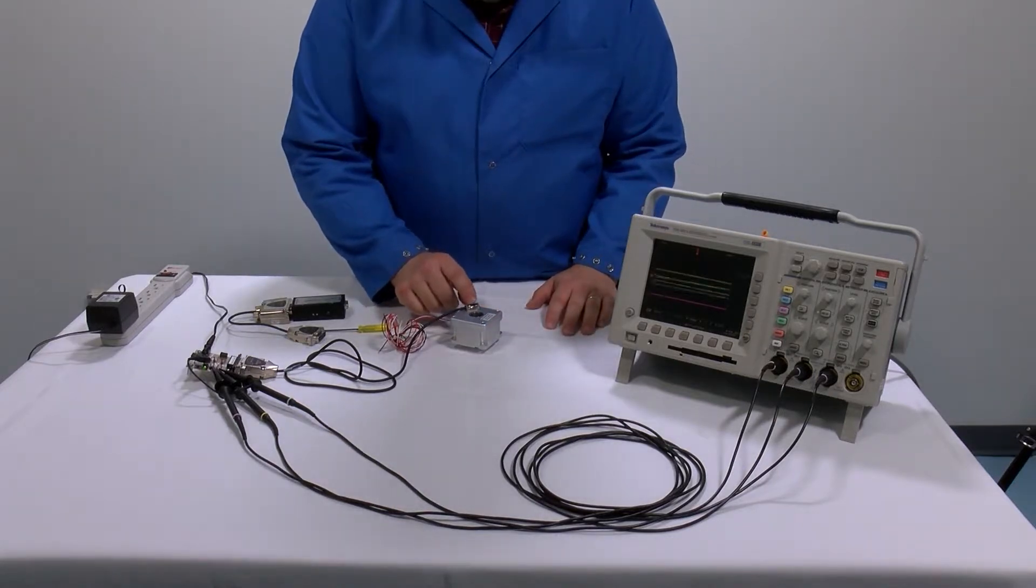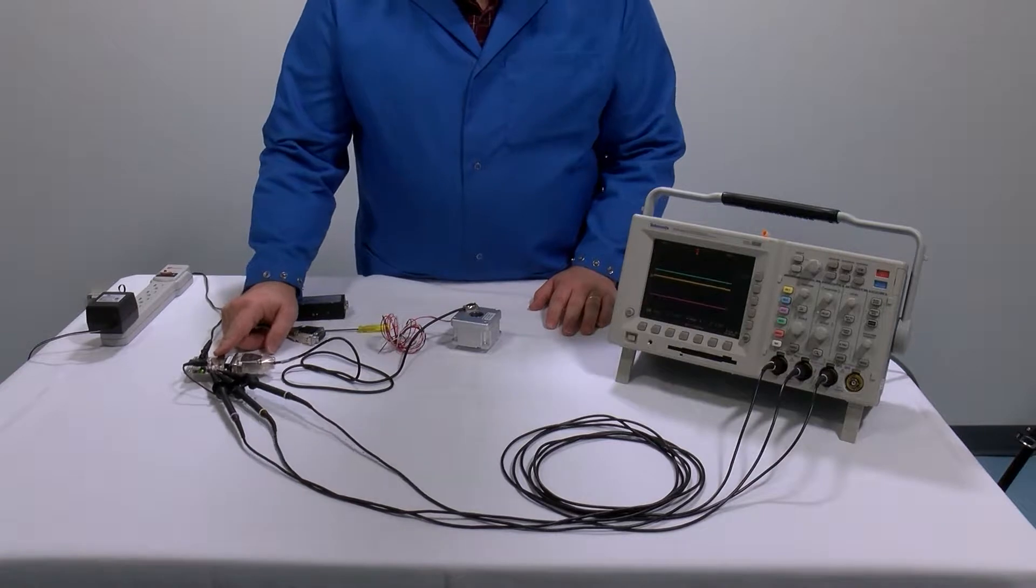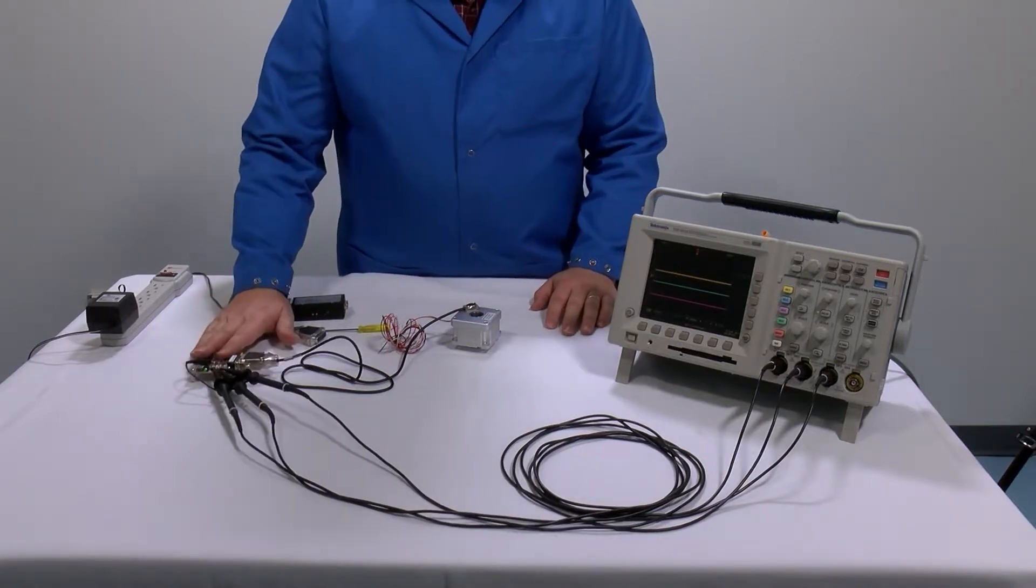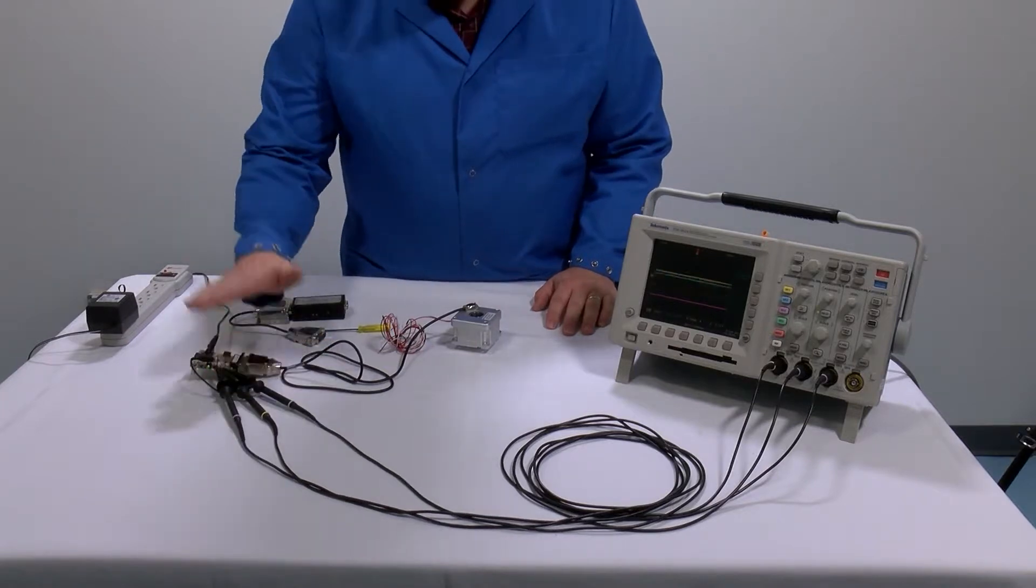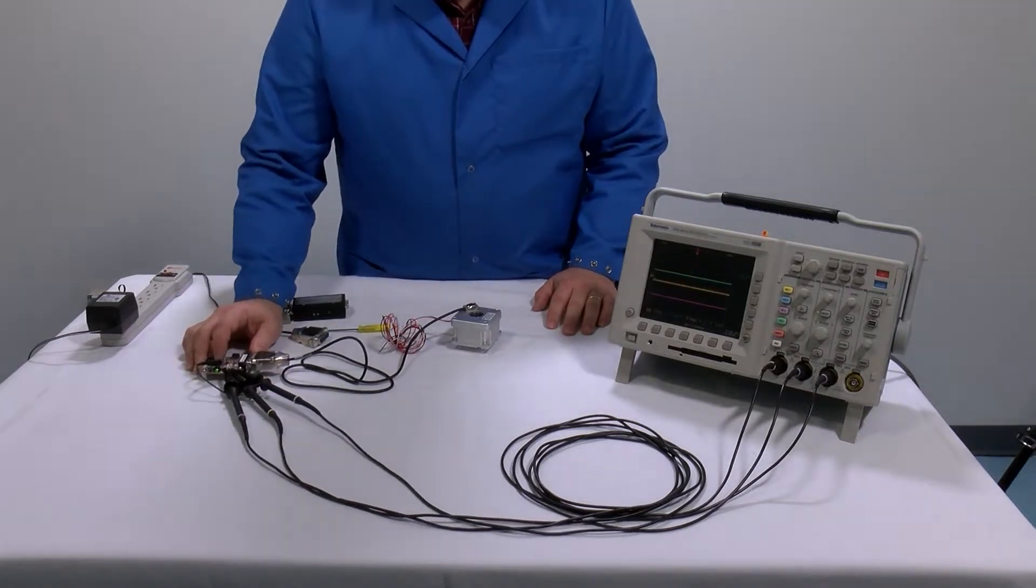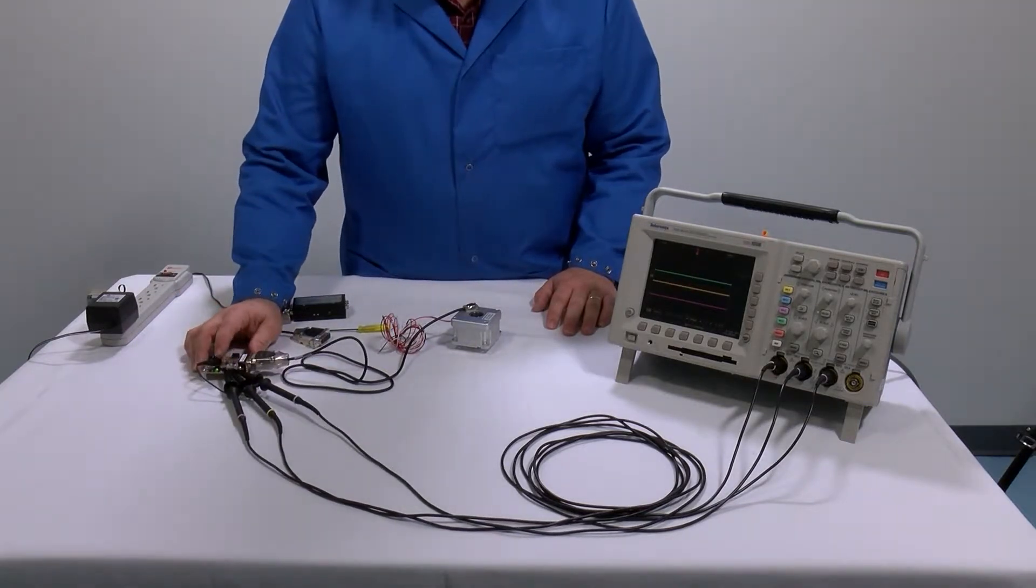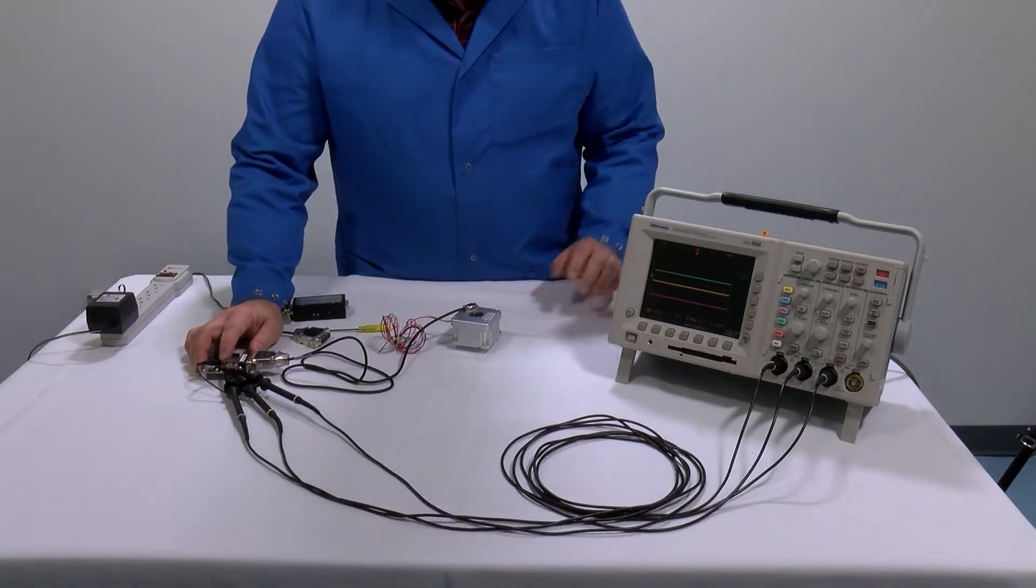You'll see we have the optical encoder connected to a breakout board where I have provided it with power and ground, and I have connected an oscilloscope to the sine plus, cosine plus, and index window plus signals.